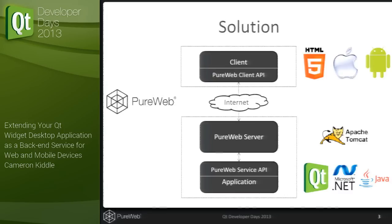This lets you create a very thin client that just receives updated images and views from the service, where you can still do native UI design and elements around that, customized to the form factor, size, and capabilities of mobile devices. Sitting in the middle is the PureWeb server, which acts as the mediator for communication between your service and your client. It's built on top of an Apache Tomcat server and handles session management, application lifecycle — starting and stopping of the application as requests come in — and authentication and other services as well.